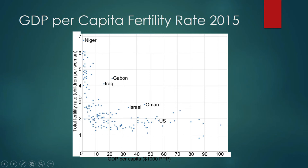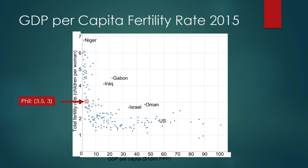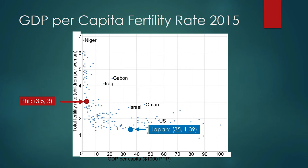Fertility rate can be understood as the number of children born per woman. In a country like Iraq, an adult woman would give birth to about 4 kids in her lifetime. For the U.S., the GDP per capita is between $50,000 and $60,000, but their fertility rate is a little less than 2. The Philippines has a GDP per capita of $3,000 and a fertility rate close to 3. Japan, a wealthier nation, has a GDP per capita of about $35,000 and a fertility rate of only 1.39.